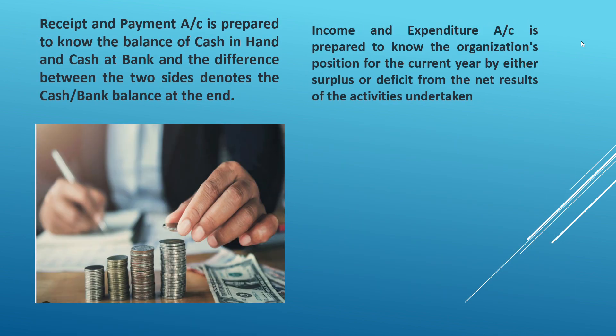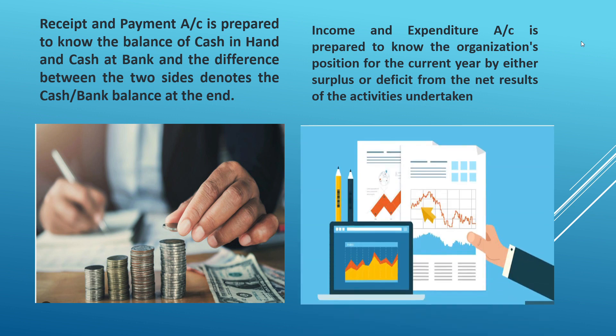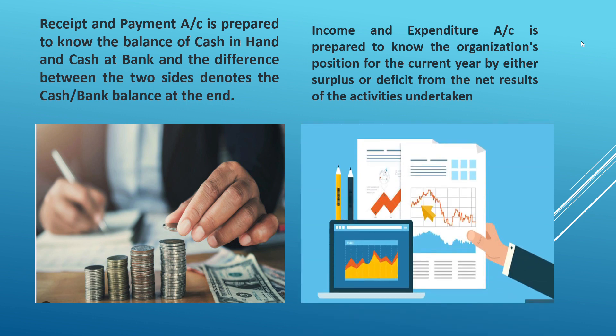Receipt and payment account is prepared to know the balance of cash in hand and cash at bank, and the difference between the two sides denotes the cash or bank balance at the end. Income and expenditure account is prepared to know the organization's position for the current year, shown by either a surplus or deficit from the net results of the activities undertaken.